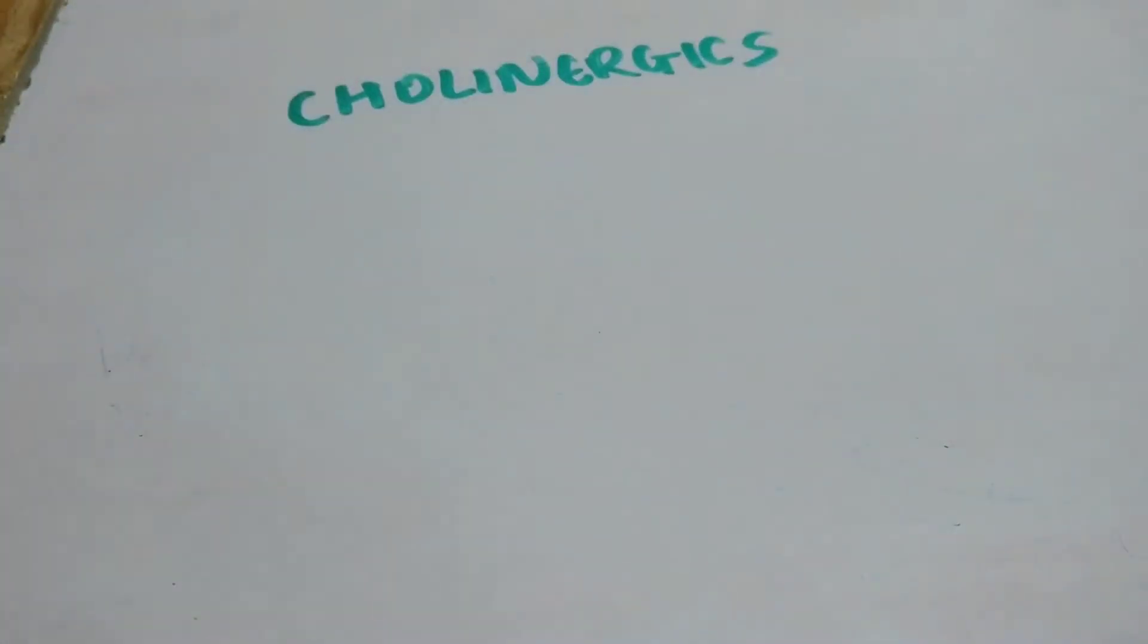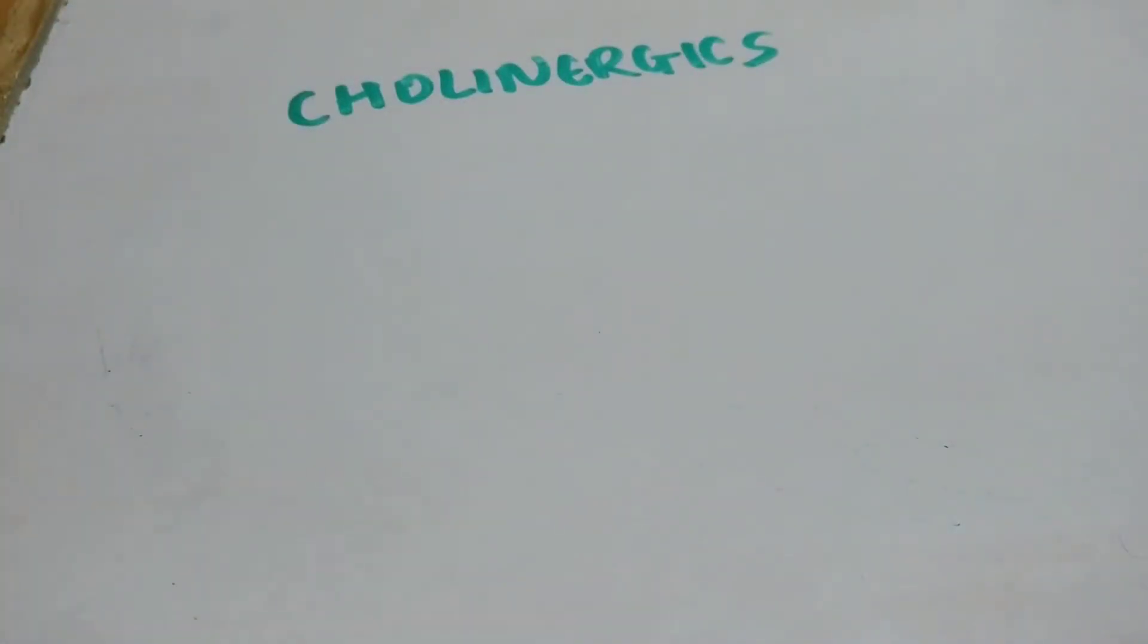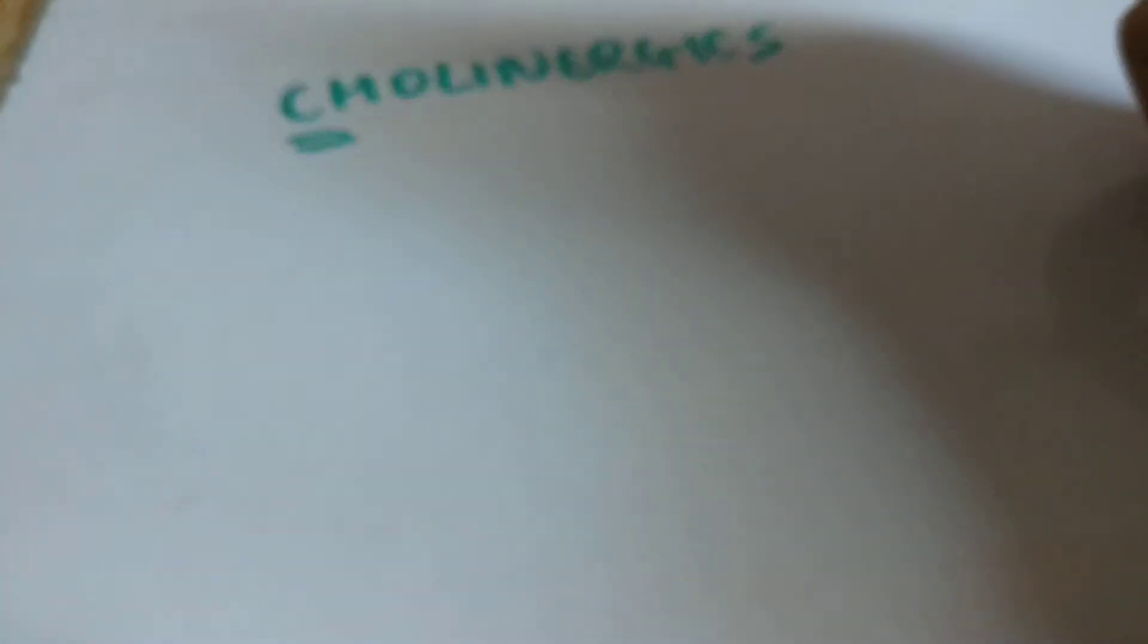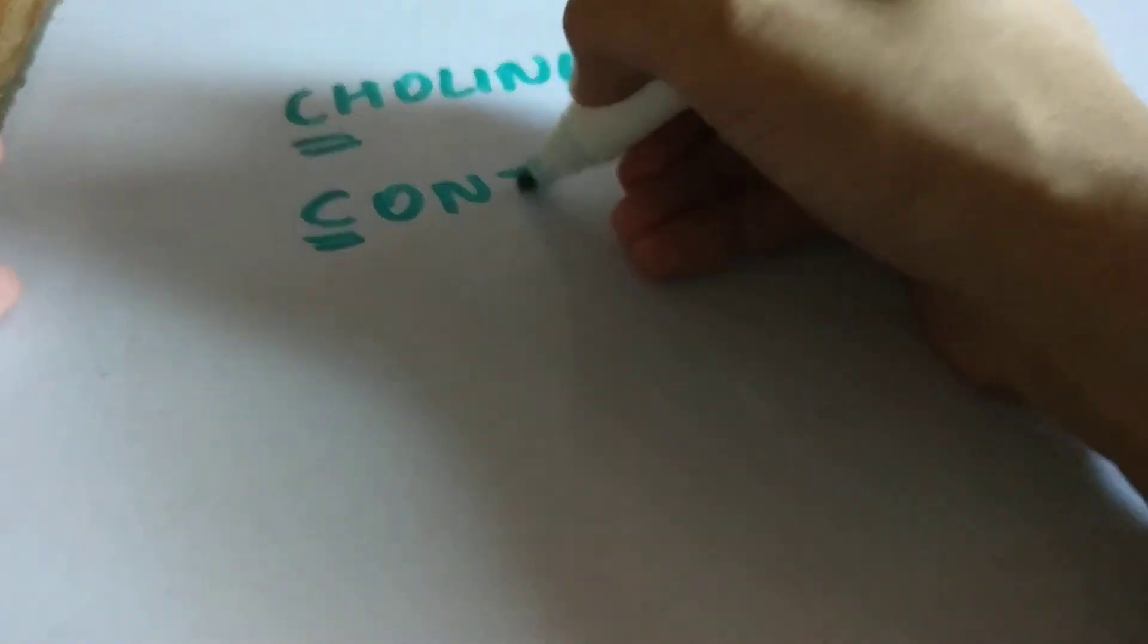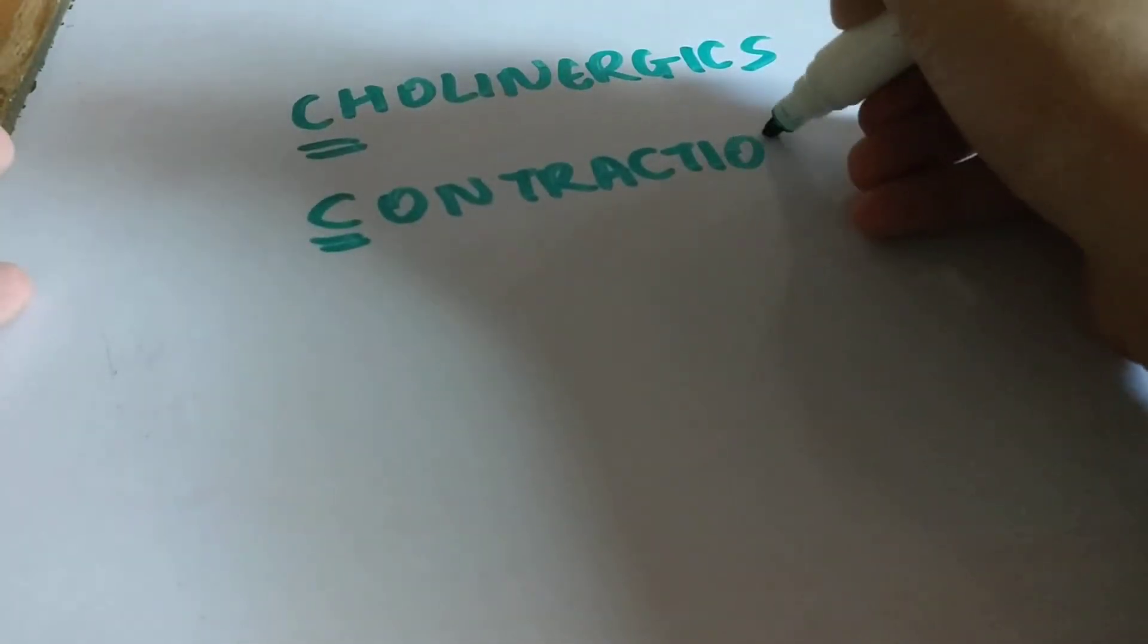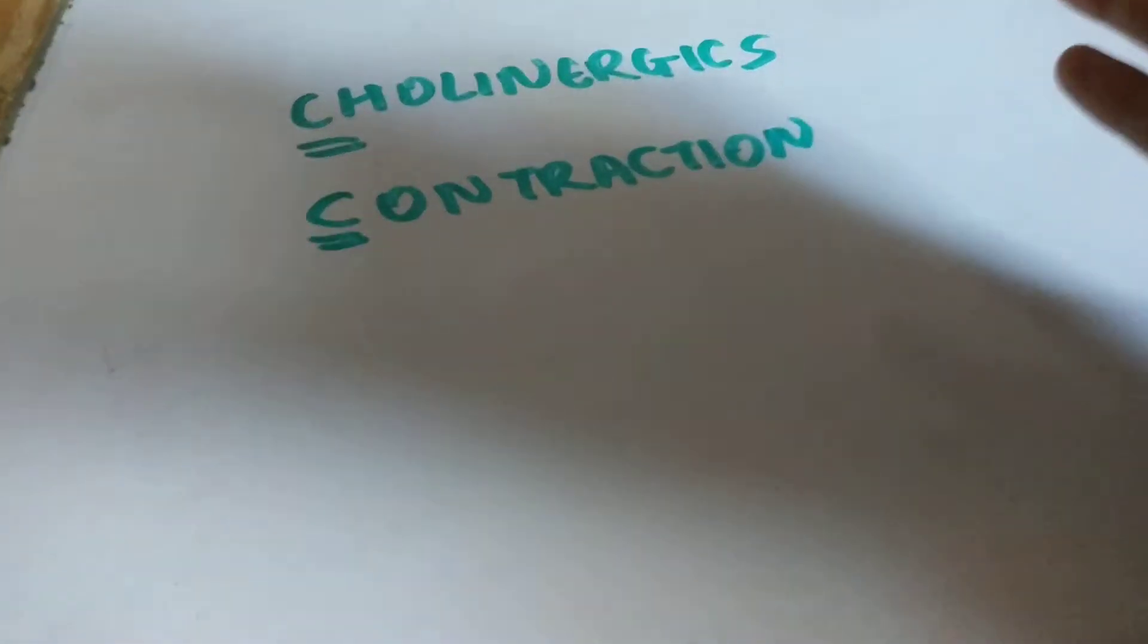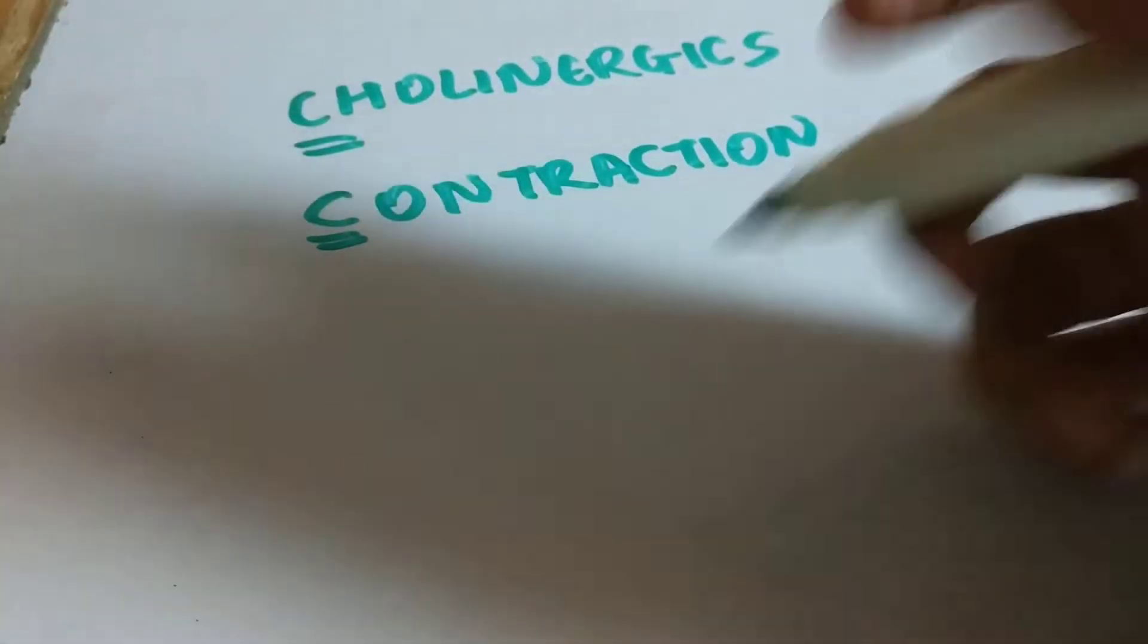Let's start with cholinergic drugs. I'll be sharing a mnemonic so you can remember this - that's my specialty. C for cholinergics and C for contraction. Cholinergic drugs cause contraction of the bladder musculature.